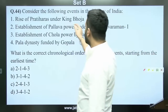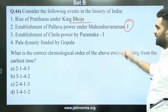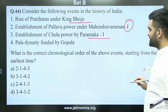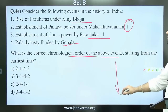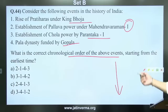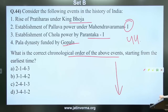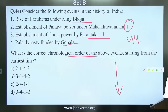Question 44: Consider the following events in the history of India — rise of Pratiharas under King Bhoja; establishment of Pallava power under Mahindra Varman I; establishment of Chola power by Parantaka I; Pala dynasty founded by Gopala. What is the chronological order of these events?